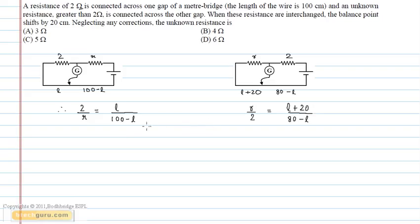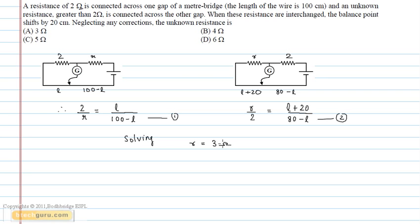Solving both of these equations simultaneously and eliminating L, we get R is equal to 3 ohms. Therefore, option A is the answer.